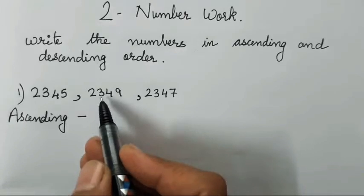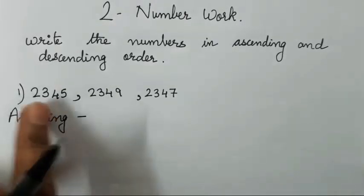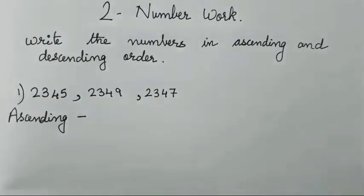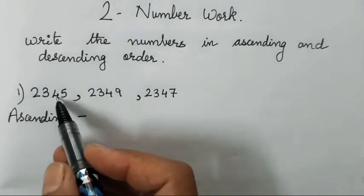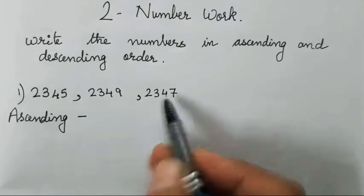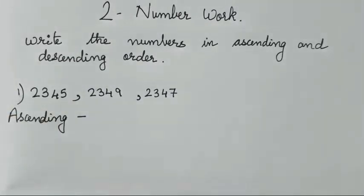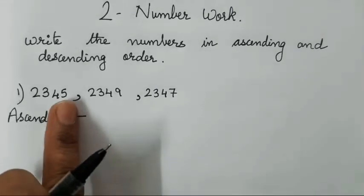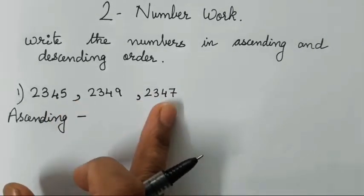Because see 23, 23, 23. All the 2s and 3s are the same. Then the next number is the 3rd digit number, that is 4, 4, 4. All the numbers are same. So last we have to see which number is there: 5, 9 and 7.